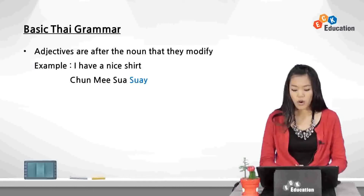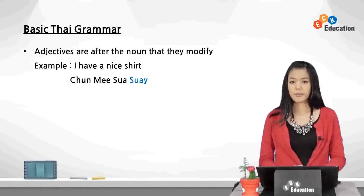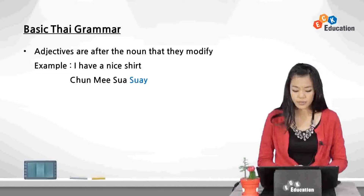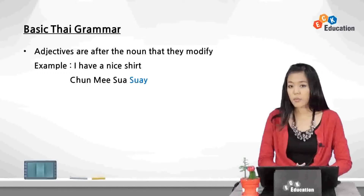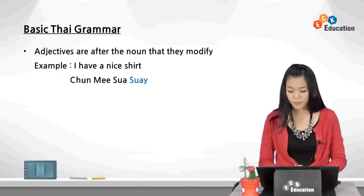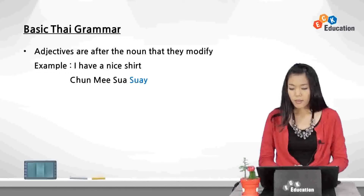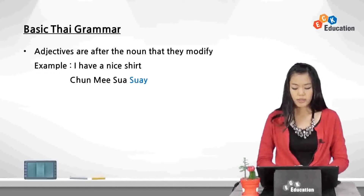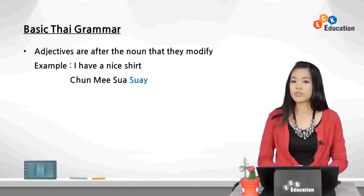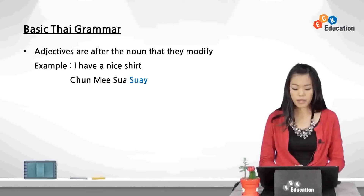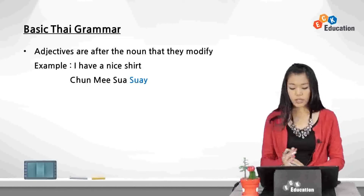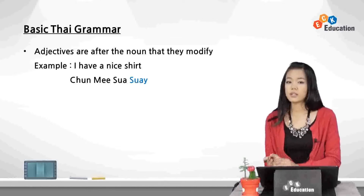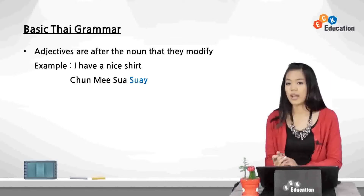Adjectives are placed after the noun they modify. For example, 'I have a nice shirt' — chan mi se soy. Chan means 'I,' mi means 'to have,' se means 'shirt,' and soy means 'beautiful' or 'nice,' which is put after the noun. So se soy means 'nice shirt.'